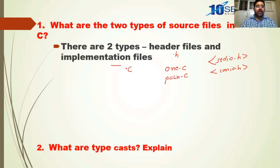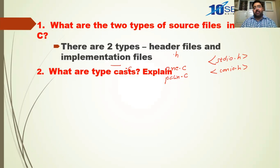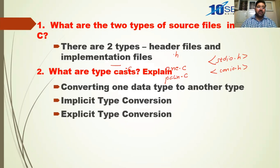The second question: what are type casts? In C language, if one operand is of one data type and another operand is of another data type, the compiler cannot evaluate such expressions. What the compiler normally does is convert the lower data type to the higher data type. The process of converting one data type to another is called type cast or type conversion. There are two types: implicit type conversion and explicit type conversion.